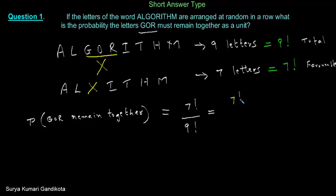Let us simplify this. This is 7 factorial as it is, and 9 factorial I can write as 9 into 8 into 7 factorial. We can cancel 7 factorial. Therefore, what we are left with is 1 in the numerator upon 9 into 8, and what is 9 into 8? This is equal to 1 upon 72. Therefore, the probability that GOR remain together is 1 upon 72. This is the required answer to the question.